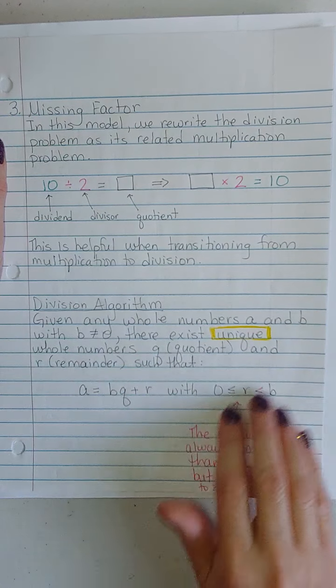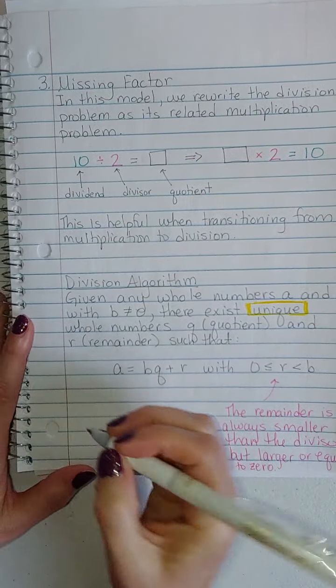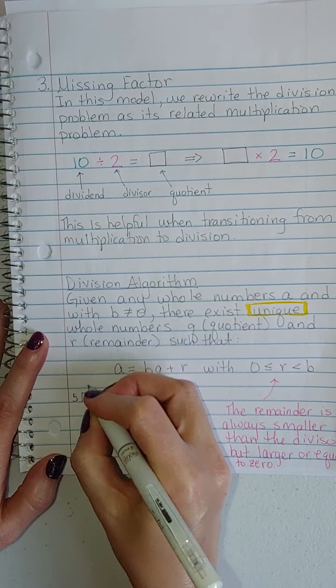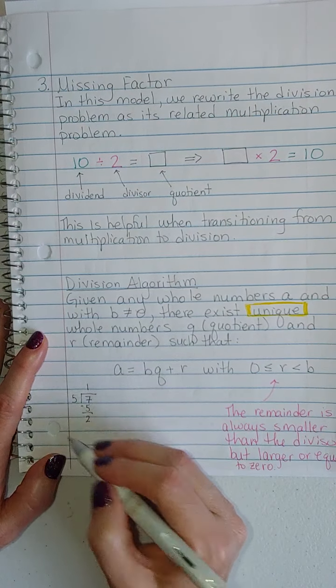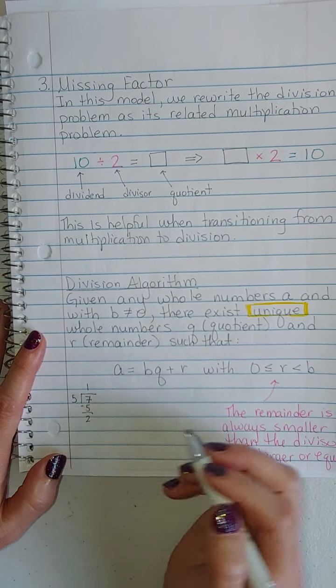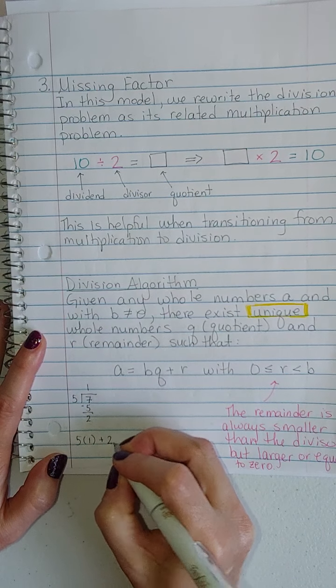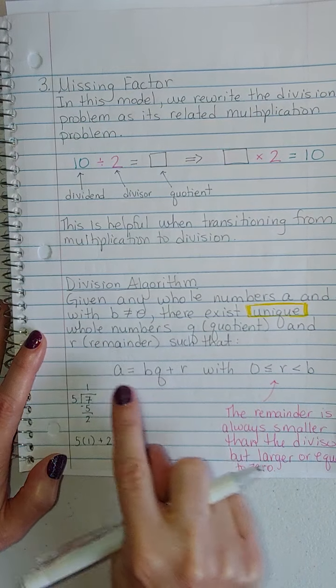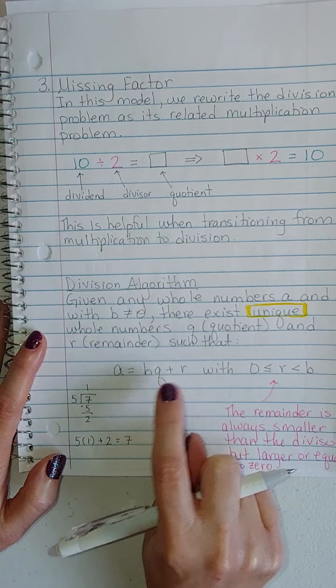Here's what all this is saying. This is just a super sexy way of doing the whole, if you divide 5 into 7, it goes one time with a remainder of 2. You could always multiply your quotient times your divisor, so you could do 5 times 1 and add the remainder, and you get your dividend. That's what this is saying. The dividend is the quotient times the divisor plus the remainder.